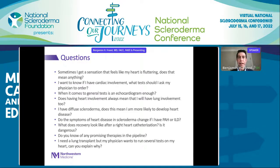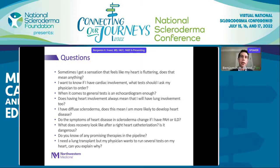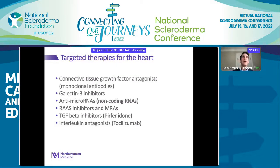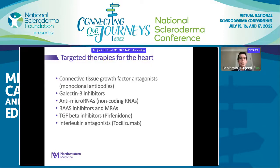Are there promising therapies in the pipeline? Unfortunately there are no therapies specific to the heart in scleroderma. Some targeted anti-fibrotic therapies are in animal or early human study phases. Pirfenidone has been studied in a phase 2 trial called PIROUETTE in patients with diastolic dysfunction — results are mixed regarding its impact on fibrosis, which is really the underlying root cause of cardiac disease in scleroderma.